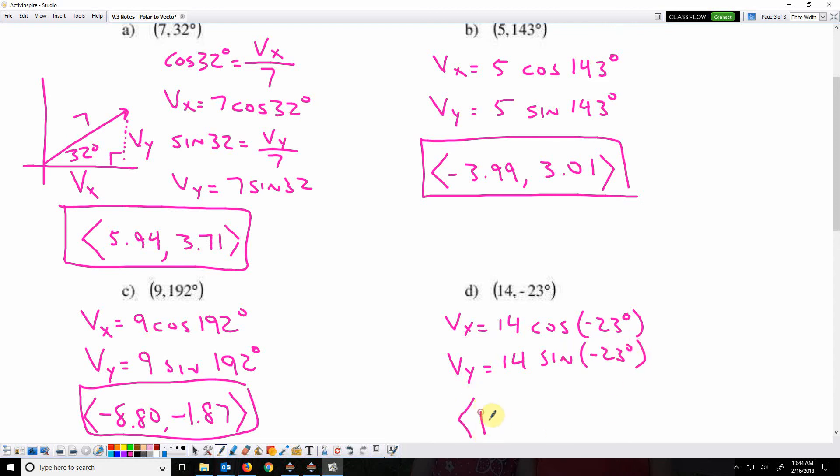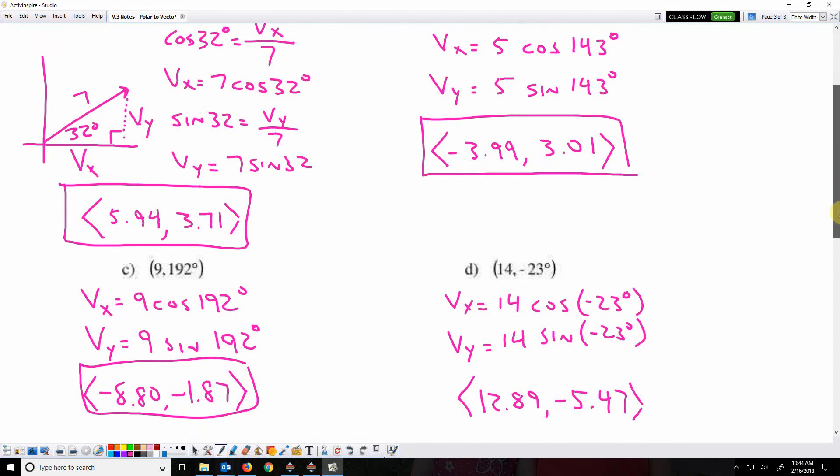So that gives you an x component of 12.89 and a y component of negative 5.47. So that's how you convert between polar and component form.